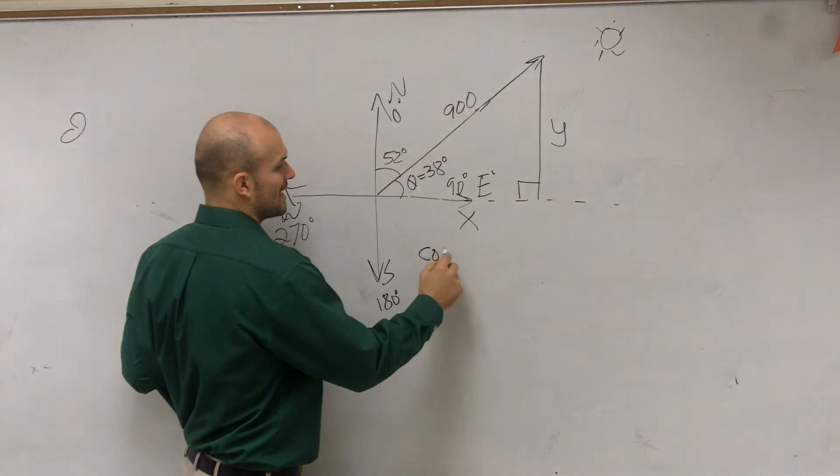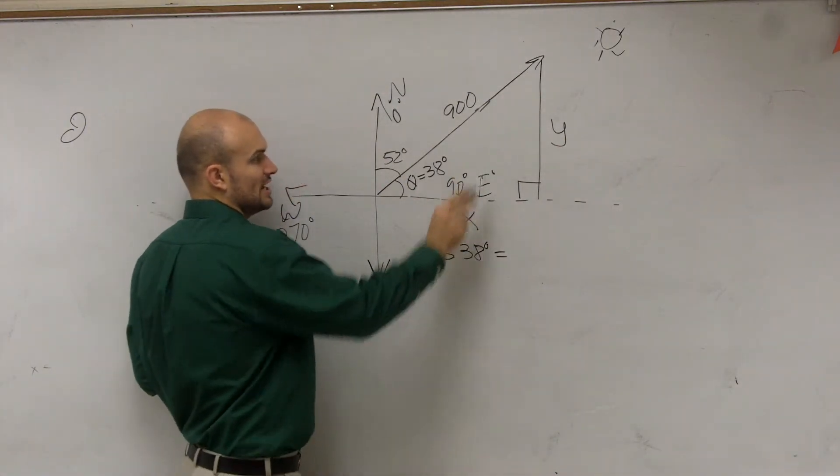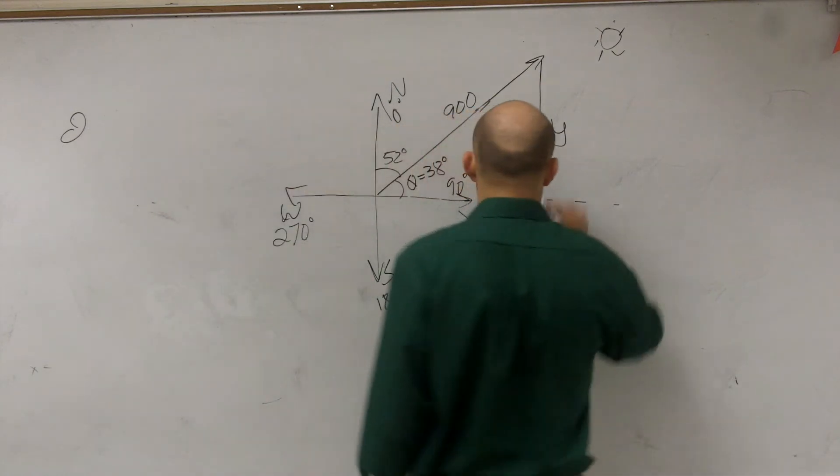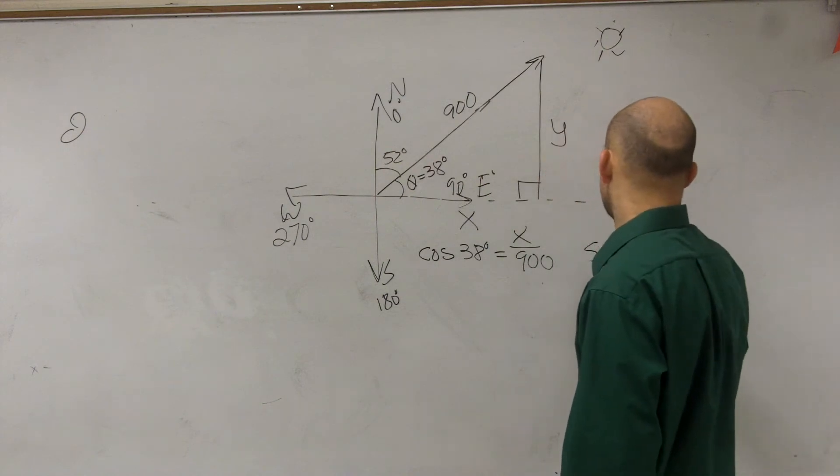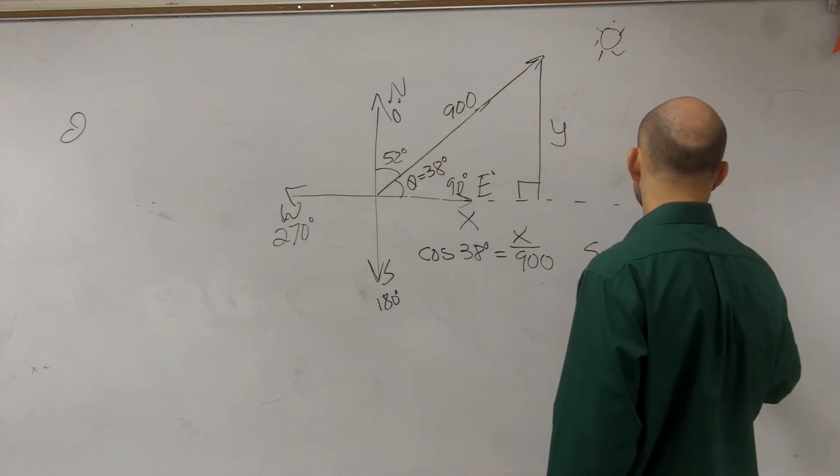So I could say the cosine of 38 degrees is equal to your adjacent over hypotenuse. Then you could say the sine of 38 degrees is equal to the opposite over the hypotenuse.